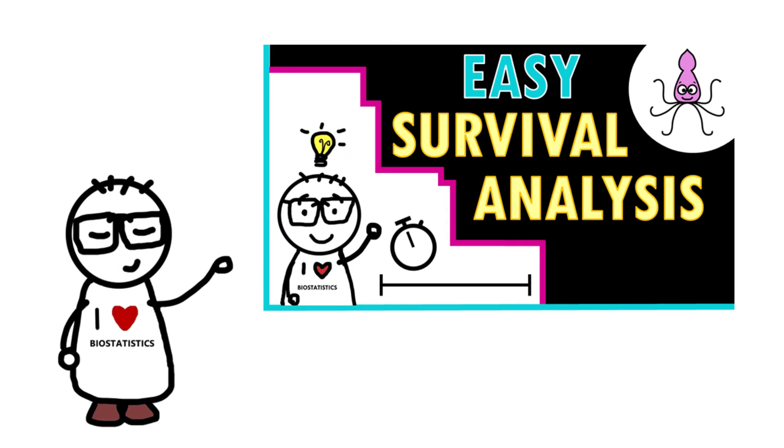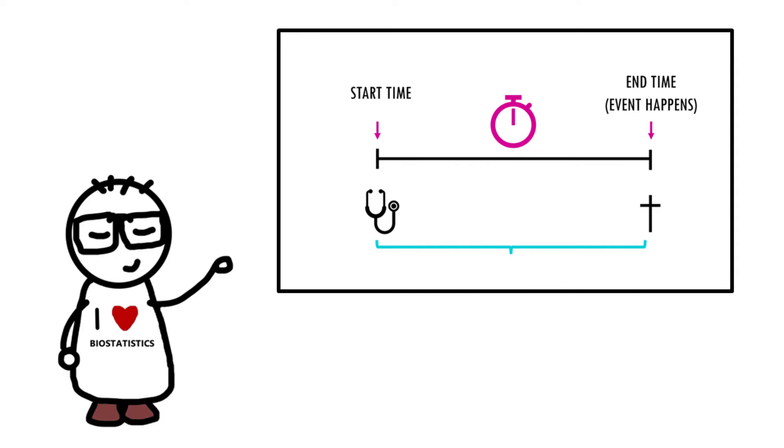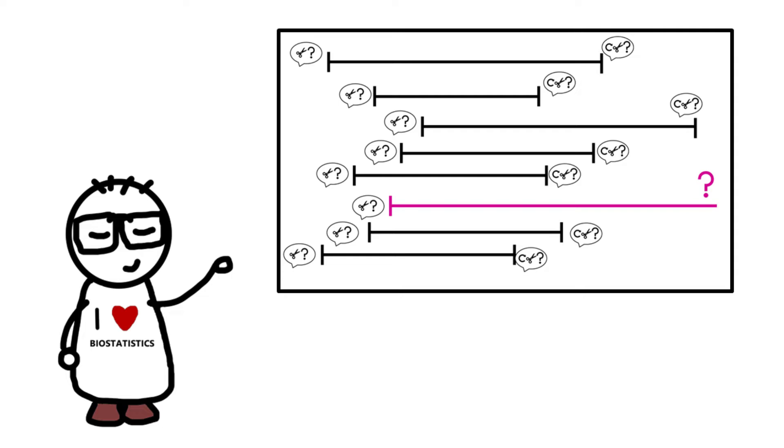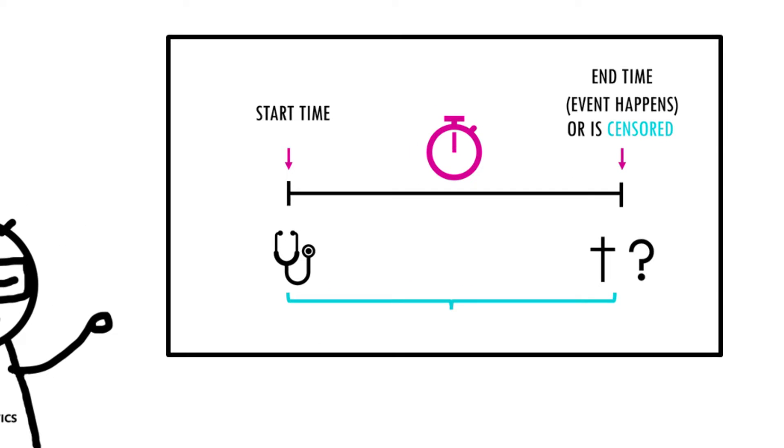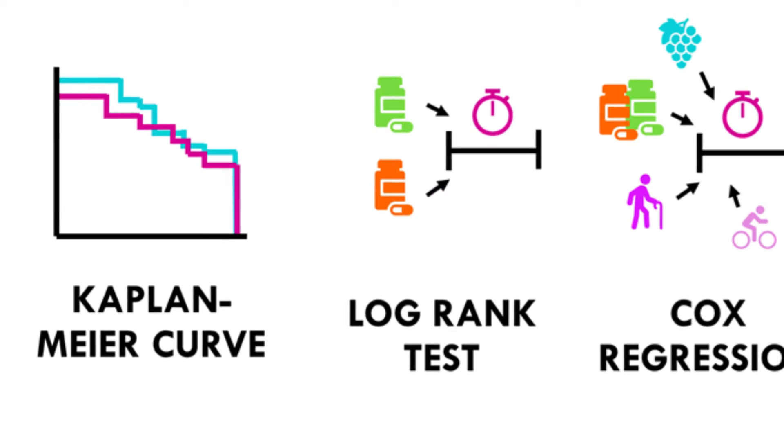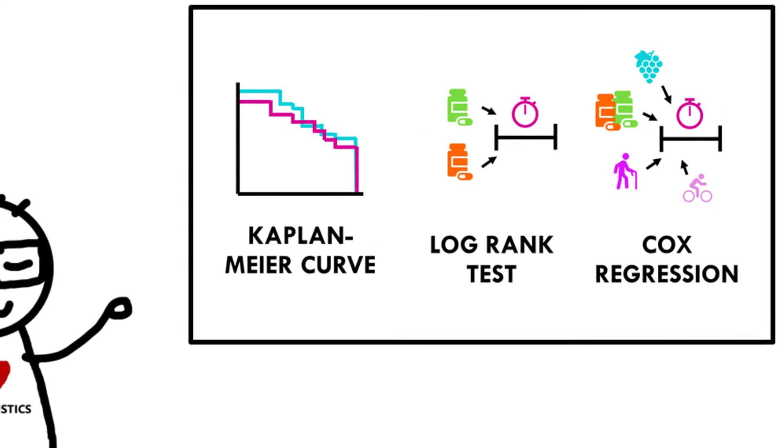Hello and welcome back to Biostat Squid. In my previous video we discussed survival time analysis, which is a group of statistical methods we use to investigate the time it takes for an event of interest to occur. For example, a typical example would be in a clinical trial where the event of interest is death.